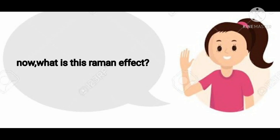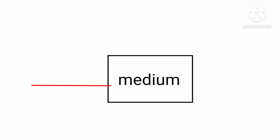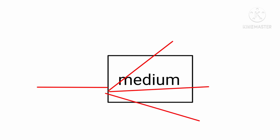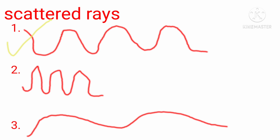Now, what is the Raman Effect? Let's understand. If we take an object or a medium and pass monochromatic light — like laser or electromagnetic light — through it, when this incident ray hits the surface, the ray scatters in two different directions. After the ray gets scattered, some rays have the same wavelength and frequency as the original, but some have shorter wavelength and higher frequency.